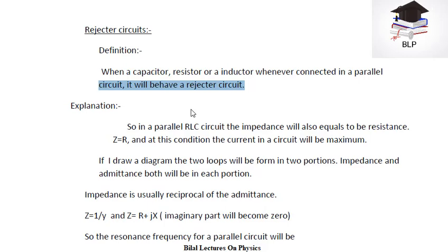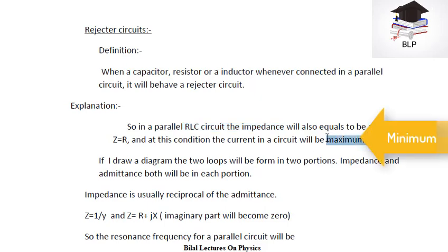In the Rejector Circuit, the parallel LC circuit impedance will also equal the resistance. So in our Rejector Circuit, the impedance will definitely equal the resistance. And why will this impedance be equal to the resistance? This is because the current in the circuit will be minimum. So current in our circuit will be minimum. If current is minimum, then definitely our impedance Z will be equal to resistance R of this circuit.